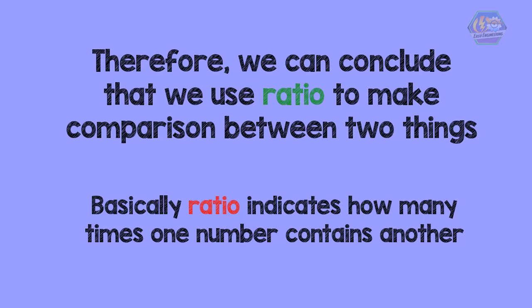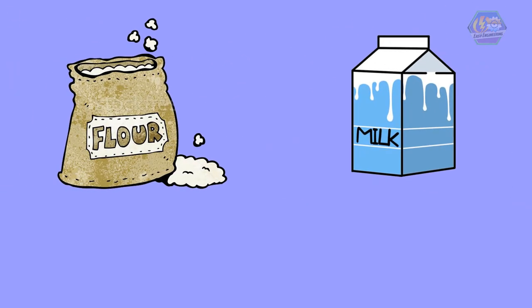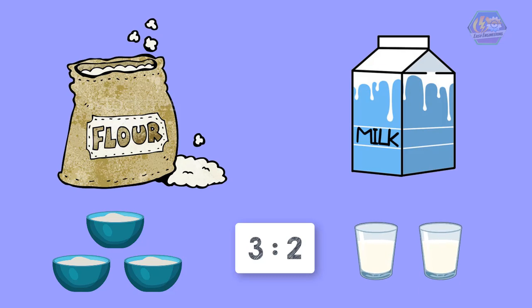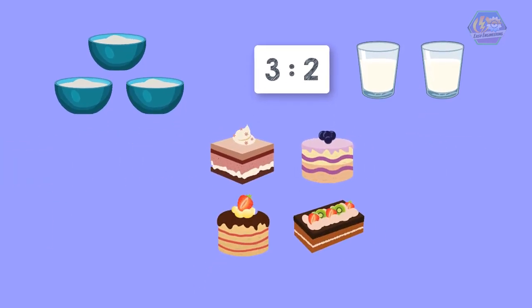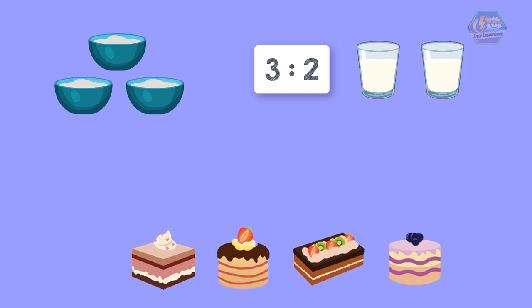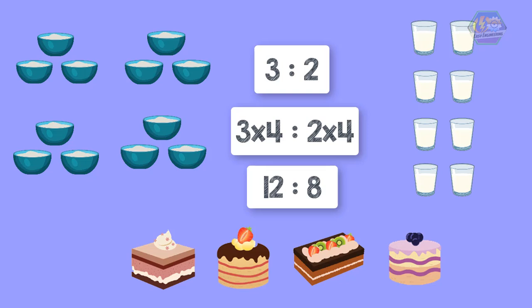Let's have another example to further understand this topic. The ratio of flour to milk is 3 is to 2. But if we make a lot of cake, what will the ratio of flour and milk be? In order to make a lot of cakes we might need 4 times the quantity, so we multiply the numbers by 4. The ratio becomes 12 is to 8. This ratio is just the same as 3 is to 2, therefore the taste of the cake with ratio 3 is to 2 is the same as the cake with ratio 12 is to 8.